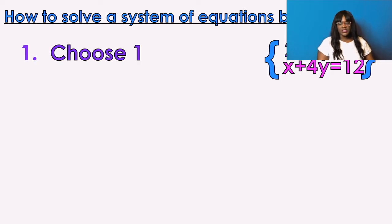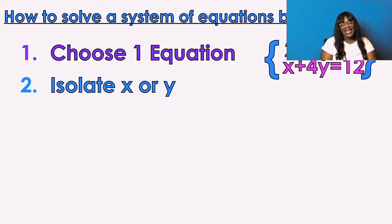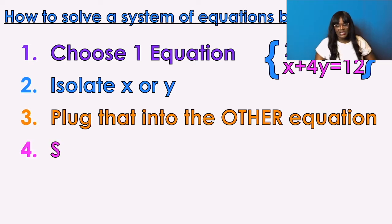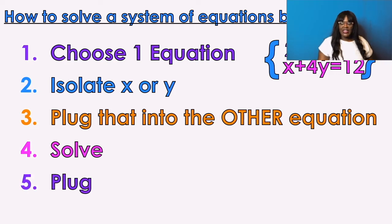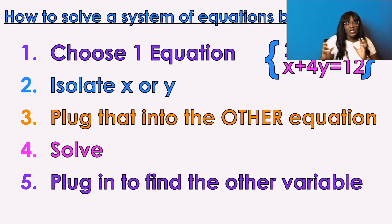How do you solve systems by substitution? Number one: choose one of the equations. Number two: isolate X or Y. The equation you choose is the one that has a variable that's easier to isolate. Number three: plug that into the other equation. Once you isolate one variable, take that and plug it into the next equation. Then solve. Remember, you always have two variables for a coordinate — an X value and a Y value. If you found Y, plug in to find X. If you found X, plug in to find Y.